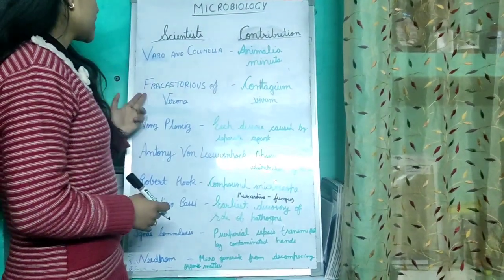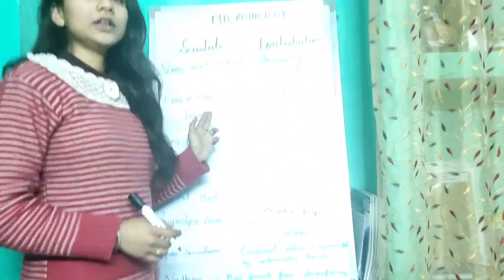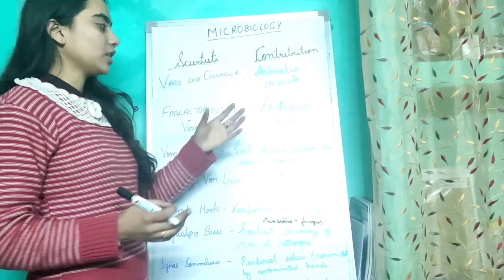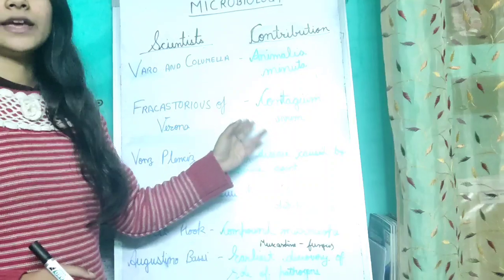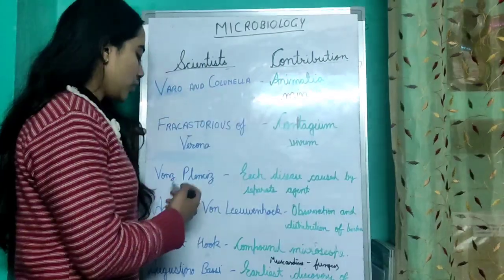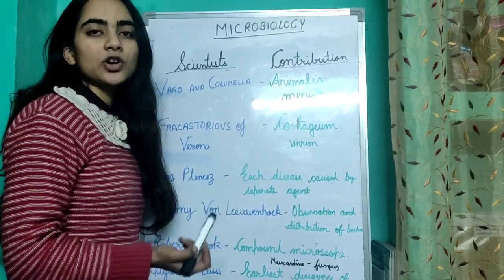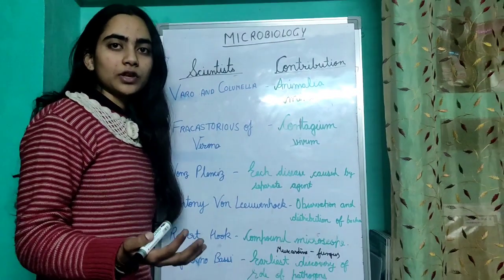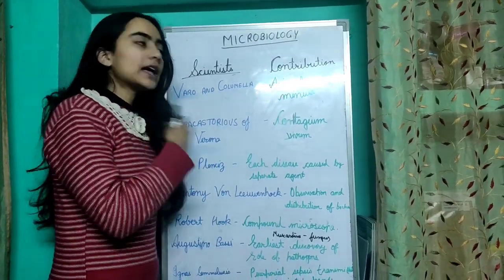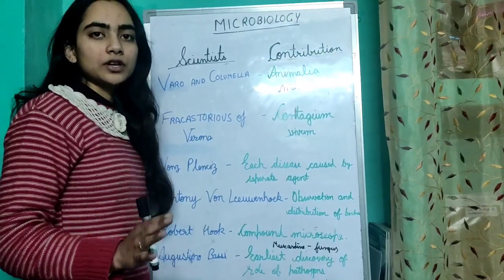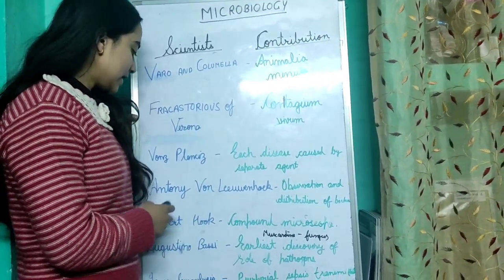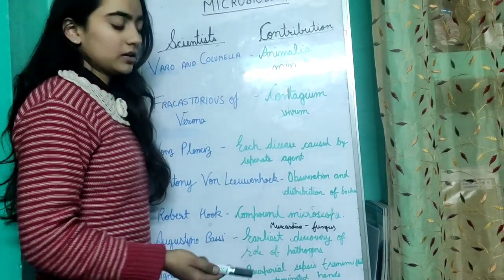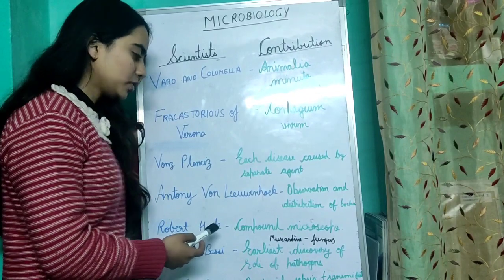Next we have Fracastorius of Verona, who told us that the possible cause of infection is contagion. Vaughan's plant says that each disease is caused by a separate agent, meaning any disease is caused by a separate agent. Next is the compound microscope.